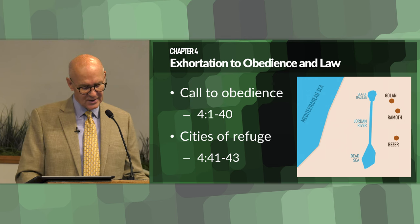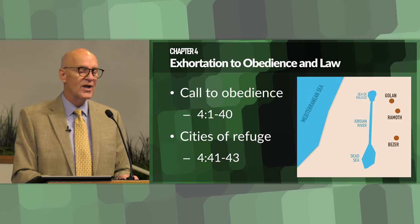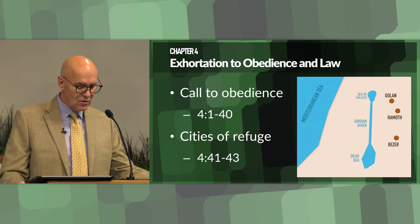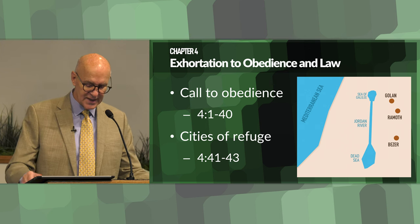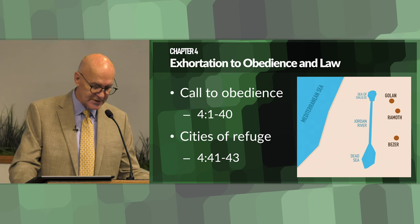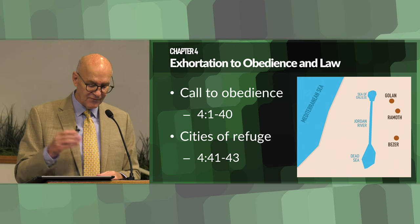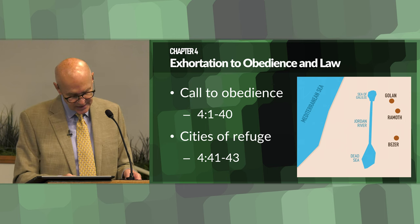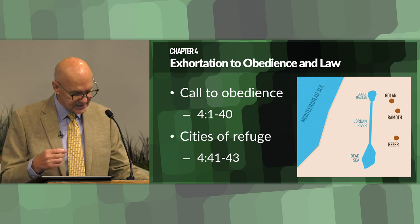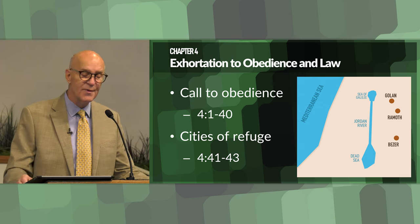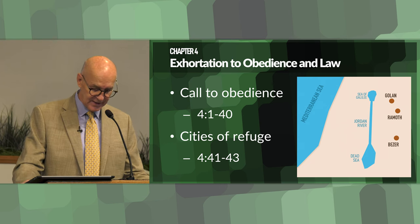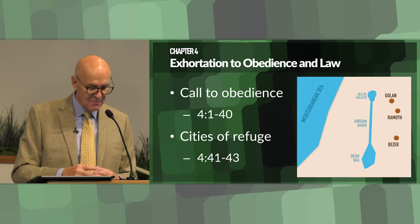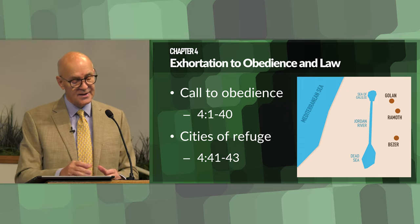Next section: lessons learned from failure and success. In Deuteronomy chapters 1 to 4, Moses addresses the Israelites as they prepare to enter the promised land, recounting their past experiences of failures and successes. Through these recollections, he imparts several vital lessons essential for their future prosperity and fidelity. Here are four basic lessons that Moses teaches about their past failures and successes.